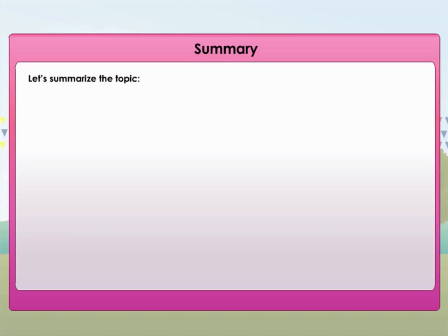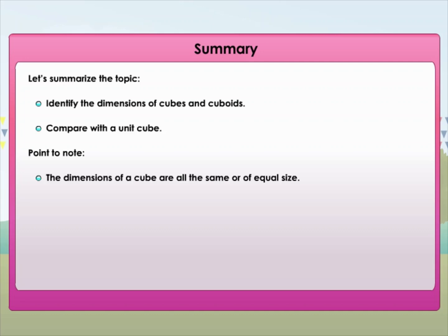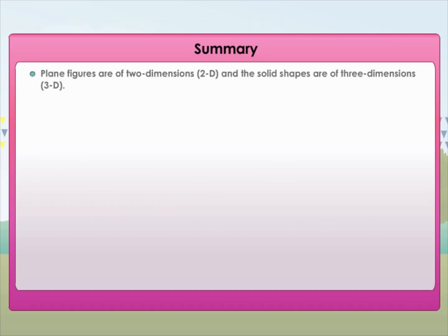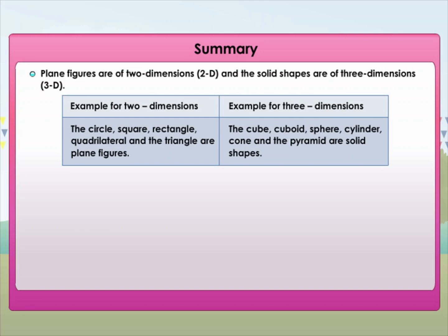Summary: Let's summarize the topic. Identify the dimensions of cubes and cuboids. Compare with a unit cube. Point to note: The dimensions of a cube are all the same or of equal size. The dimensions of a cuboid are not equal. The amount of space filled up by the unit cubes of the solid figure is the volume. Plane figures are of two dimensions and solid shapes are of three dimensions. Examples for two dimensions: the circle, square, rectangle, quadrilateral, and the triangle are plane figures.